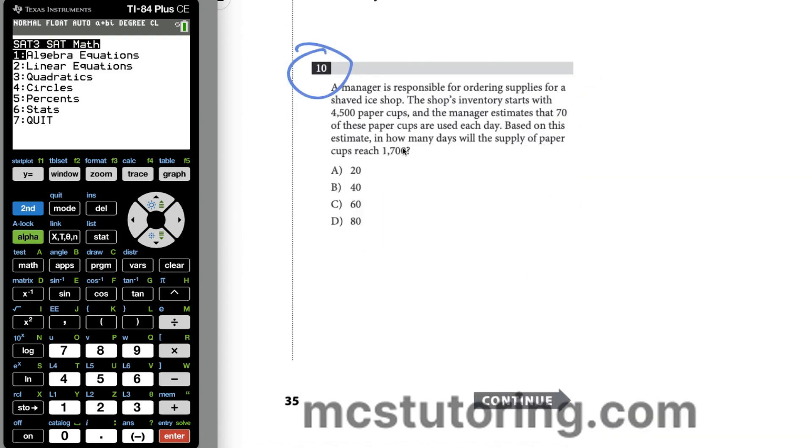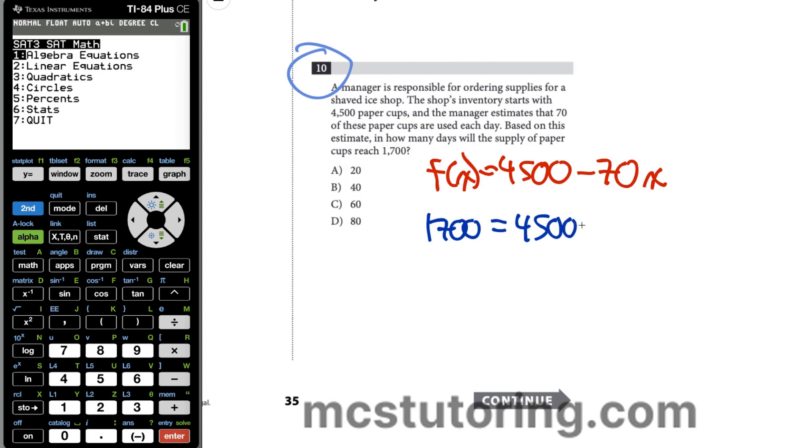Number 10. The shop's inventory starts with 4,500 paper cups. Manager estimates 70 of these paper cups are used each day. Based on this estimate, how many days will the supply of paper cups reach 1,700? Basically we could say f of X equals 4,500 minus 70X. X is the number of days, and you're dropping 70 cups used each day. So when does this reach 1,700? My next step would be 1,700 equals 4,500 minus 70X, because they're asking what day will it reach that. X is the number of days.